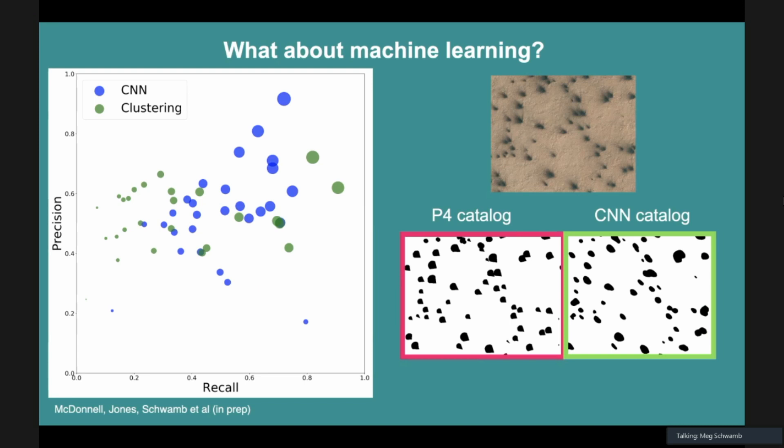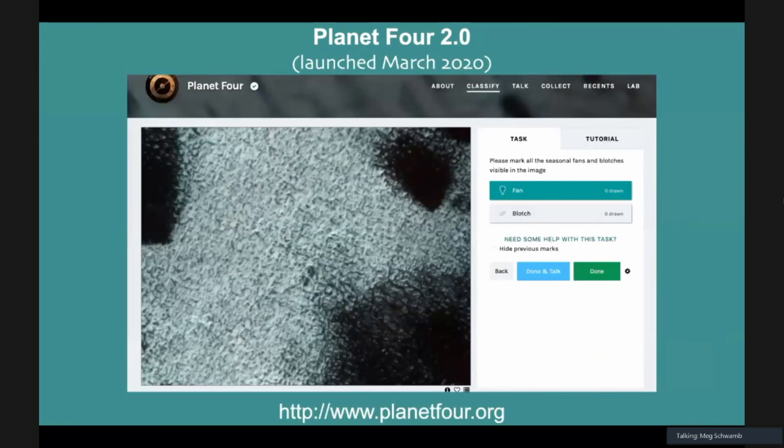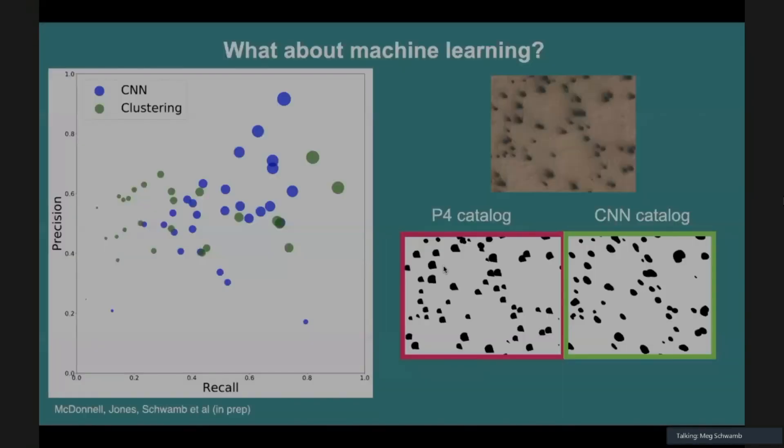Just to show you, here on the left you've got in this small image, you've got the Planet 4 catalog and on the right is the CNN and it does pretty good at least identifying the sources.